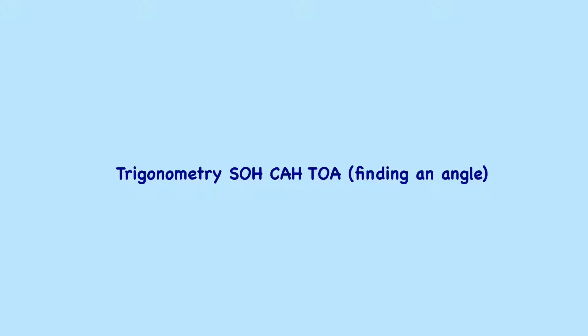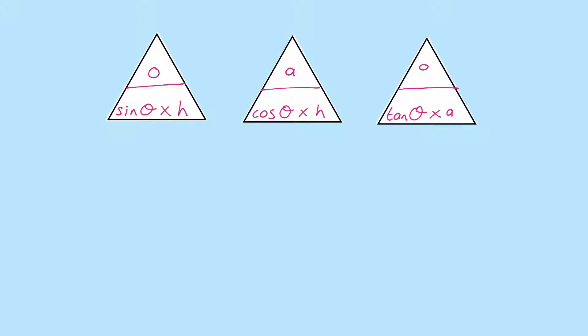Let us remind ourselves of the formula triangles, and we still have our four steps. When finding an angle, it's just the last step, step number four, which is slightly different.